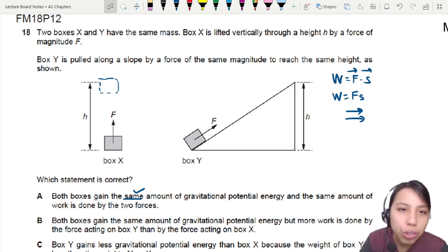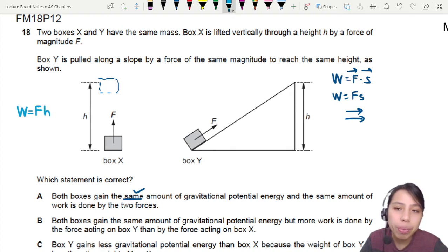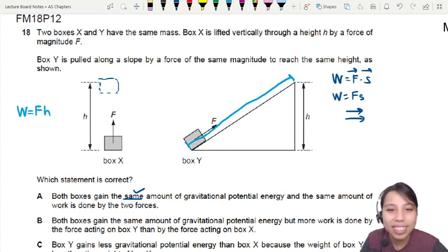The displacement traveled by the first box X on the left side is actually H. So if we do the work done, it will be force upwards times H. How about the box on the right? The box on the right is actually going to travel a whole distance here, which is not H for sure. It's going to be more than H.